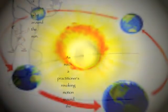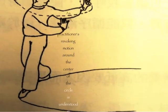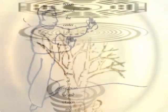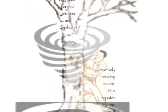As such, a practitioner's revolving motion around the center of the circle is understood in terms of Gong Zhuan, orbital rotation, and Zhir Zhuan, axial rotation.